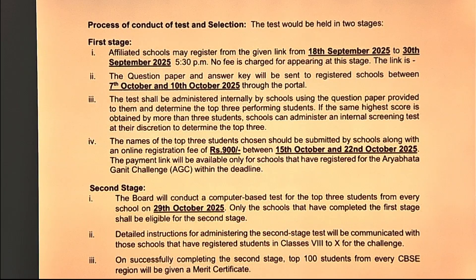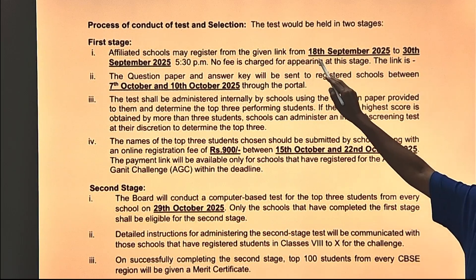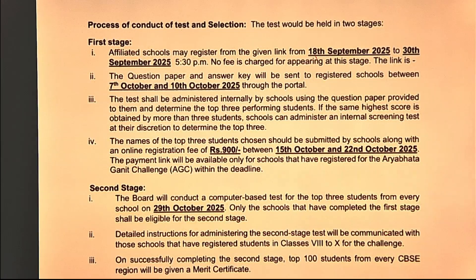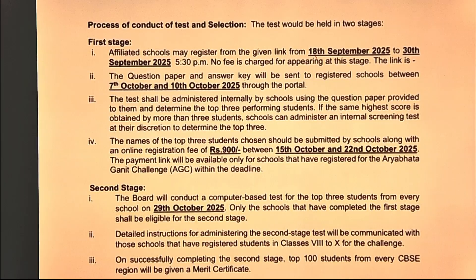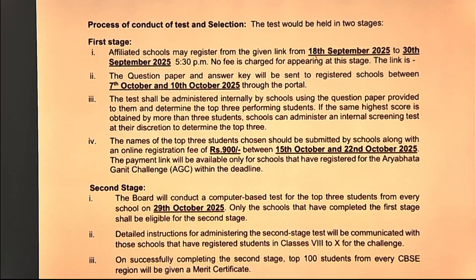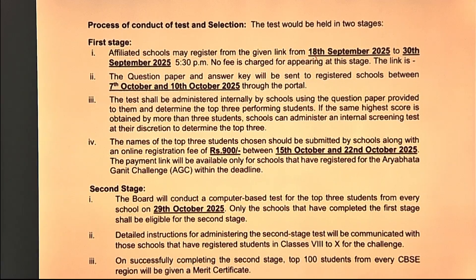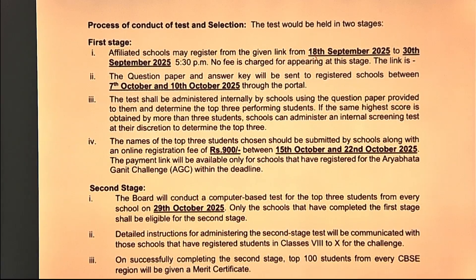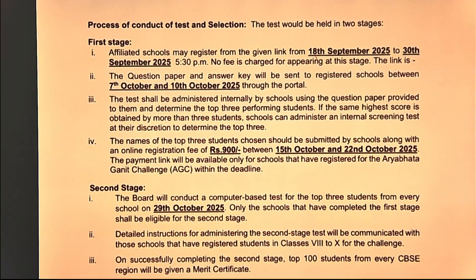The stage 1 registration for the school is open from 18th September and it is open till 30th September 2025. The question paper and the answer key will be shared with the school portal from 7th October to 10th October. The school will take the test and will select the top 3 qualifiers from the school, who will appear for the stage 2 level.